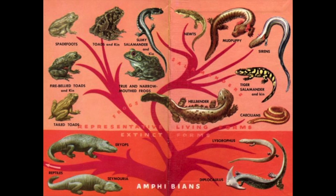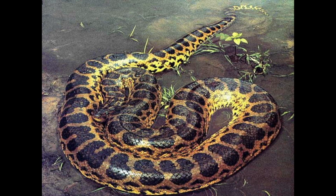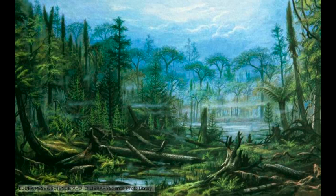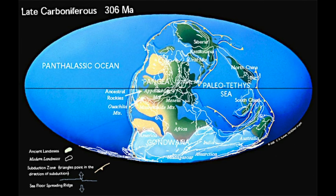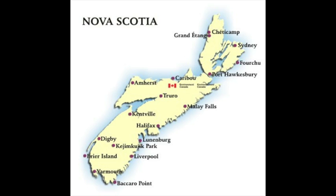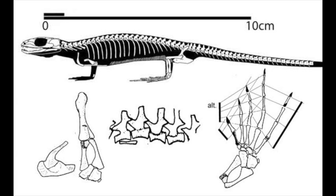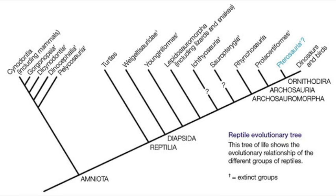From amphibians, reptiles evolved around 310 to 320 million years ago, being scaled, laying hard-shelled eggs, and having an ectothermic metabolism. The first reptiles were living in a time when the Earth was largely covered by swamps called the Carboniferous. Footprints in Nova Scotia dated to 315 million years ago match fossils attributed to anomalous species. Very soon after reptiles emerged, two major populations branched.